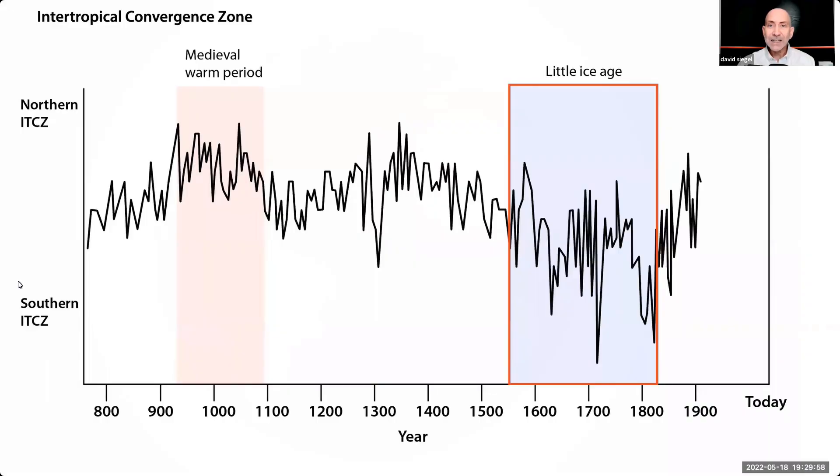During the Little Ice Age, the ITCZ was in the south. This caused a tremendous buildup of ice in the Arctic. More ice built up during this 200 years than in the previous 6,000 years.